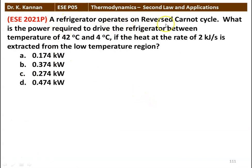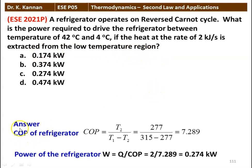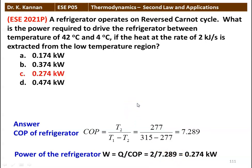Next question: a refrigerator operates on a reversed Carnot cycle. What is the power required to drive the refrigerator between temperatures of 42°C and 4°C, if heat at the rate of 2 kJ/s is extracted from the low temperature region? Answer: COP = T2/(T1−T2) = 277/(315−277) = 7.289. Power W = Q/COP = 2/7.289 = 0.274 kilowatt.